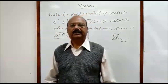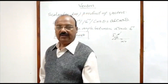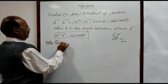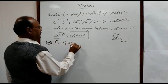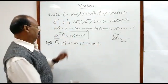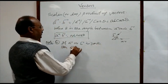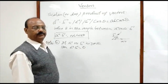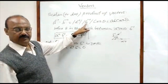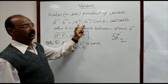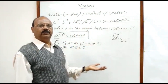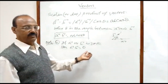Here are some important points to note. First, if either vector a or vector b is zero, then a dot b equals zero. Since if a is zero then the magnitude of a will be zero, or if b is zero the magnitude of b will be zero. So whenever either or both of the two vectors are zero vectors, their dot product will be zero.